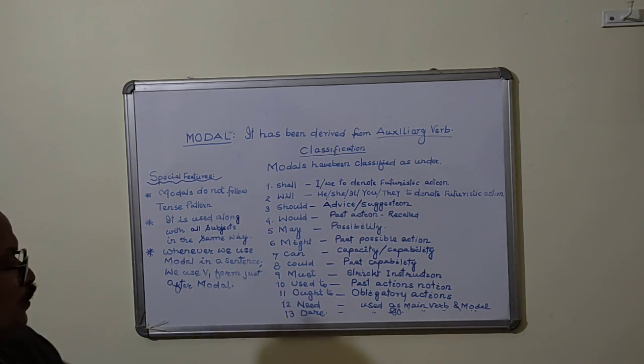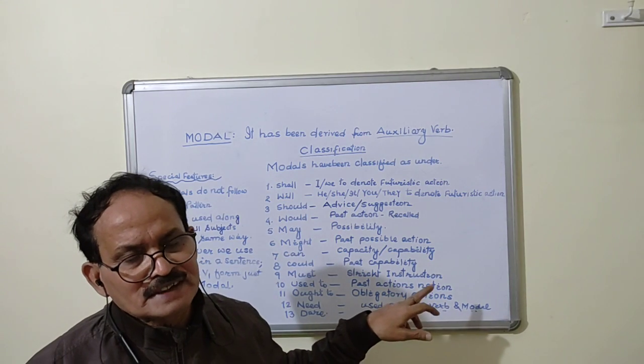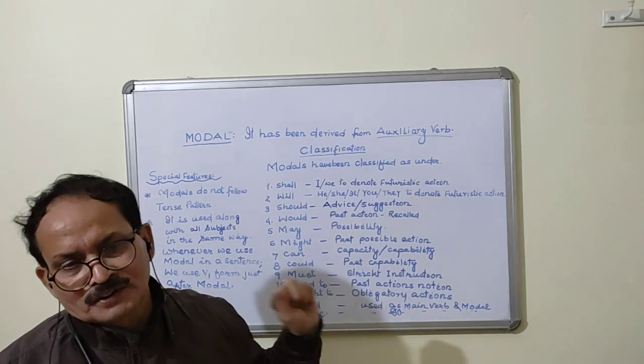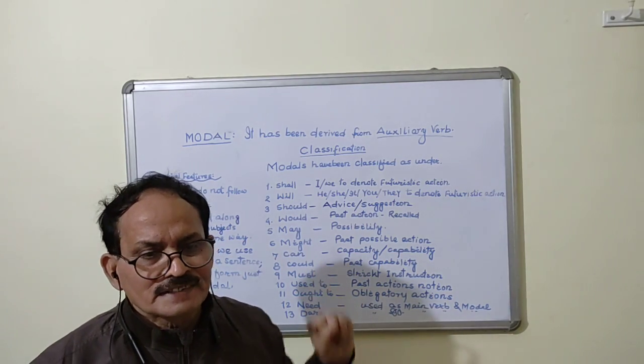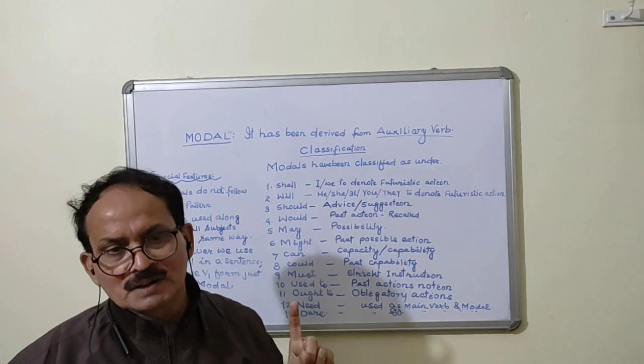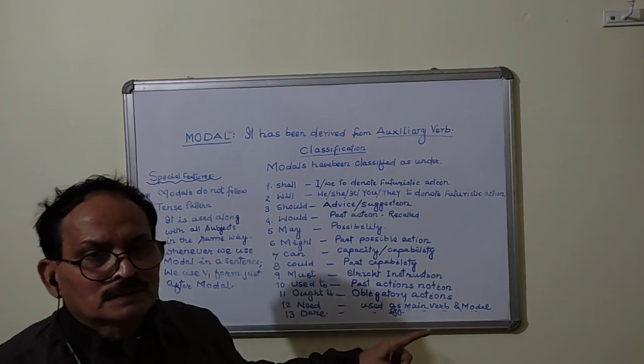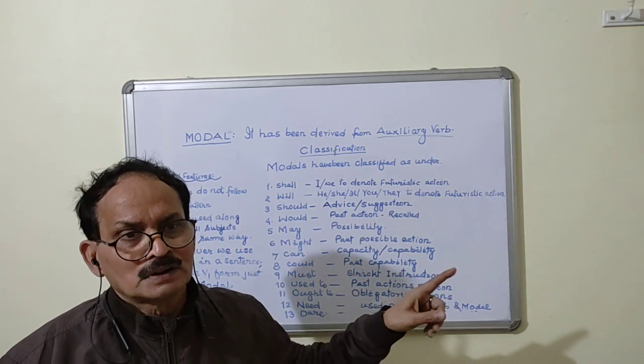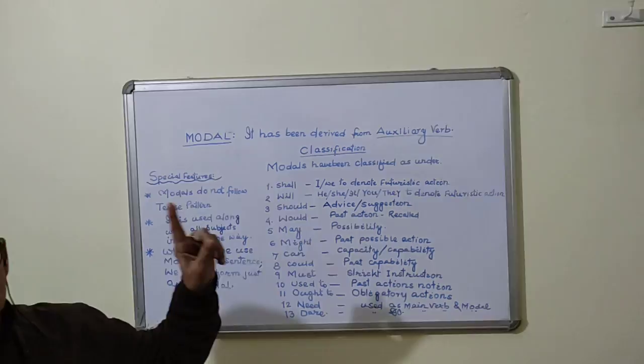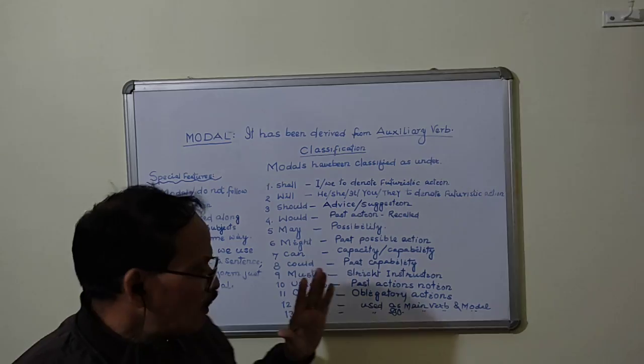Used to is used to denote past actions and notions taken by the subject. For example, if I say he used to sing but at present he is not in a position to sing. He used to run but at present he is not in a position even to walk. Means in past days he was the person who used to run.